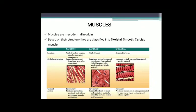Muscles are mesodermal in origin. Based on their structures, they are classified into three types: skeletal muscle, smooth muscle, and cardiac muscle. Smooth muscles are located in the wall of hollow organs, vessels, and respiratory passageways.